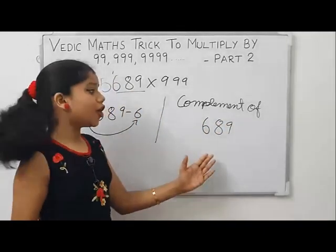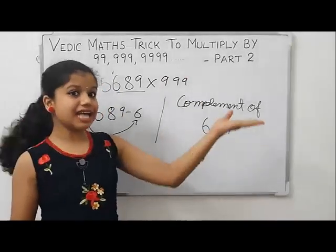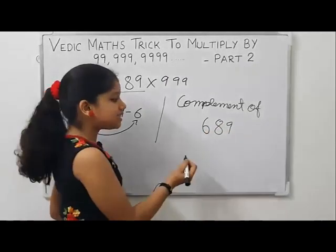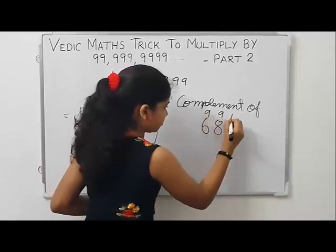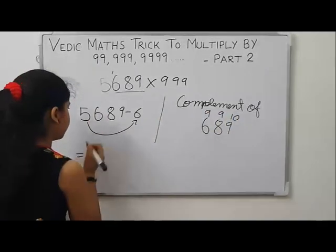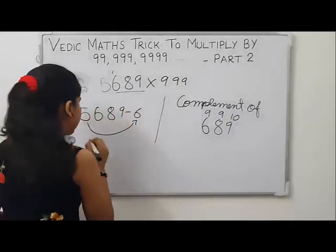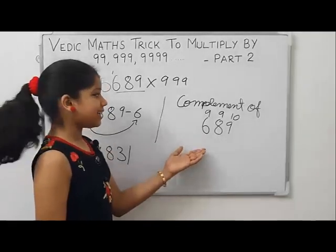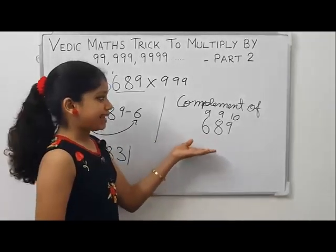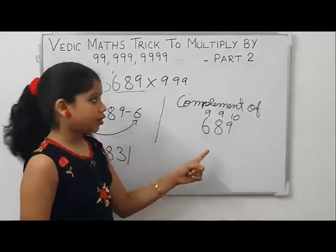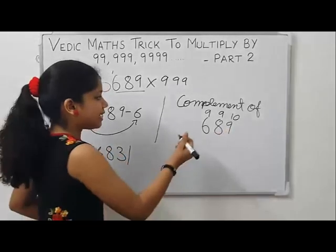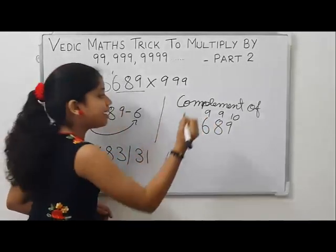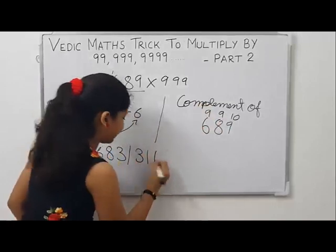I hope all of you have learned how to find a complement in my last video. To find the complement, apply the rule: all digits from nine and the last digit from ten. Now, 5689 minus 6 is 5683. To find the RHS part, find the complement of 689 by applying the rule all digits from nine and the last digit from ten. That is: nine minus six is three, nine minus eight is one, ten minus nine is one.